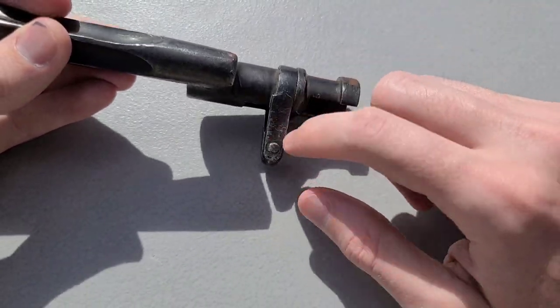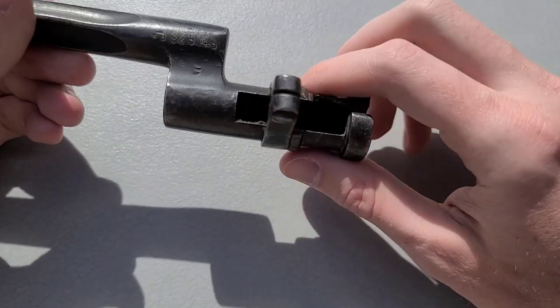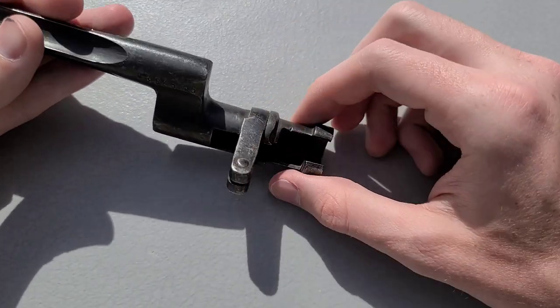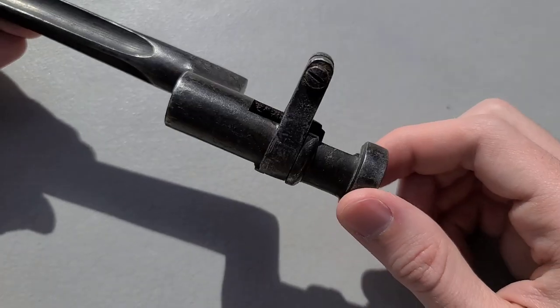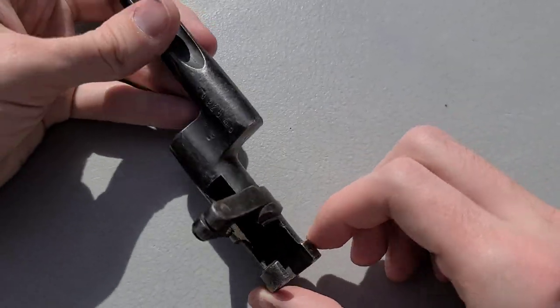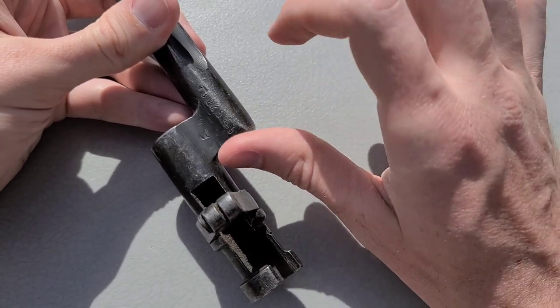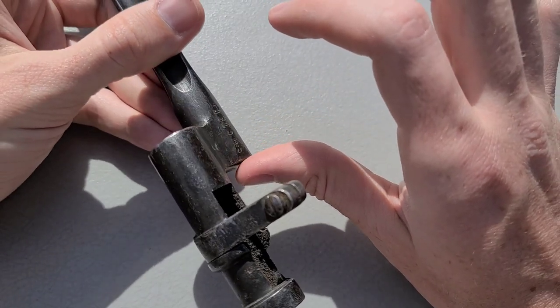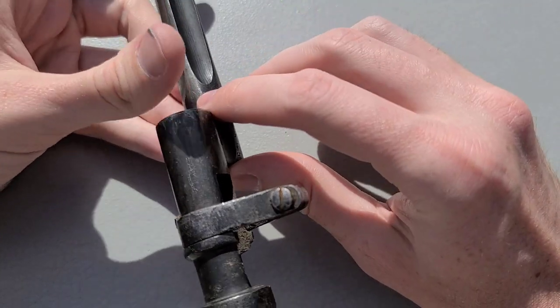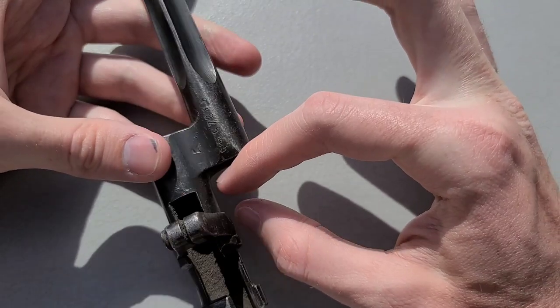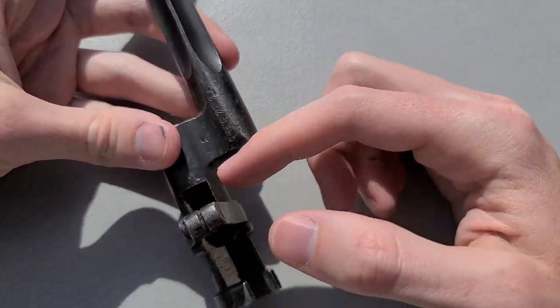First of all, we know this is a World War One bayonet and how do we know that? Well, the big giveaway is this ring right here. On the World War Two style bayonets, which are going to be the common type of Mosin bayonet, they have a little plunger here and there's a button on the side.